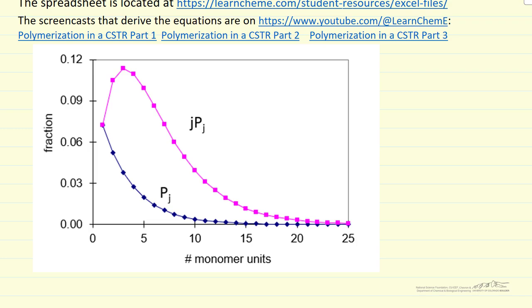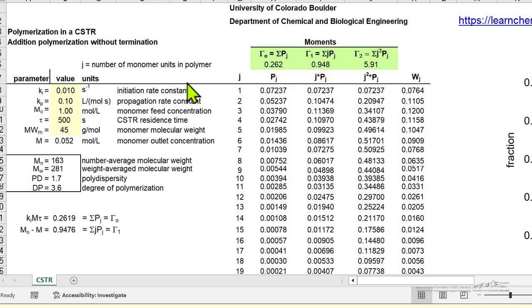Let's look at this spreadsheet. It shows in light yellow the parameters that we can change and explains what these parameters are and their units.